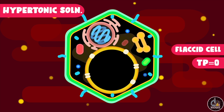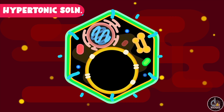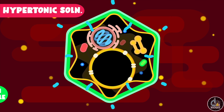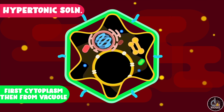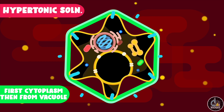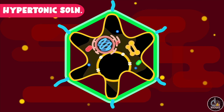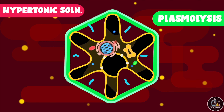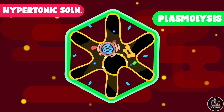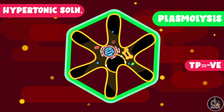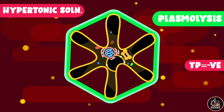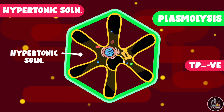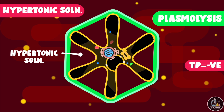But the water loss doesn't stop and the cell loses more water, due to which the protoplast starts detaching from the cell wall. This process of detachment of protoplast from the cell wall is called plasmolysis. As the protoplast starts detaching, the space between the cell wall and the cell membrane is filled by the external hypertonic solution.